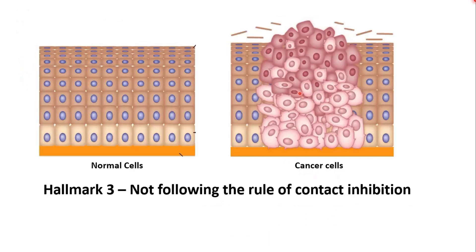The third hallmark of tumor cells is they don't follow the rule of contact inhibition. That means they don't stop dividing when they come into contact with other cells like normal cells do. Normal cells follow contact inhibition because they want to create a properly structured tissue, but cancer cells neglect it completely — keep dividing, piling up, and making tumors.